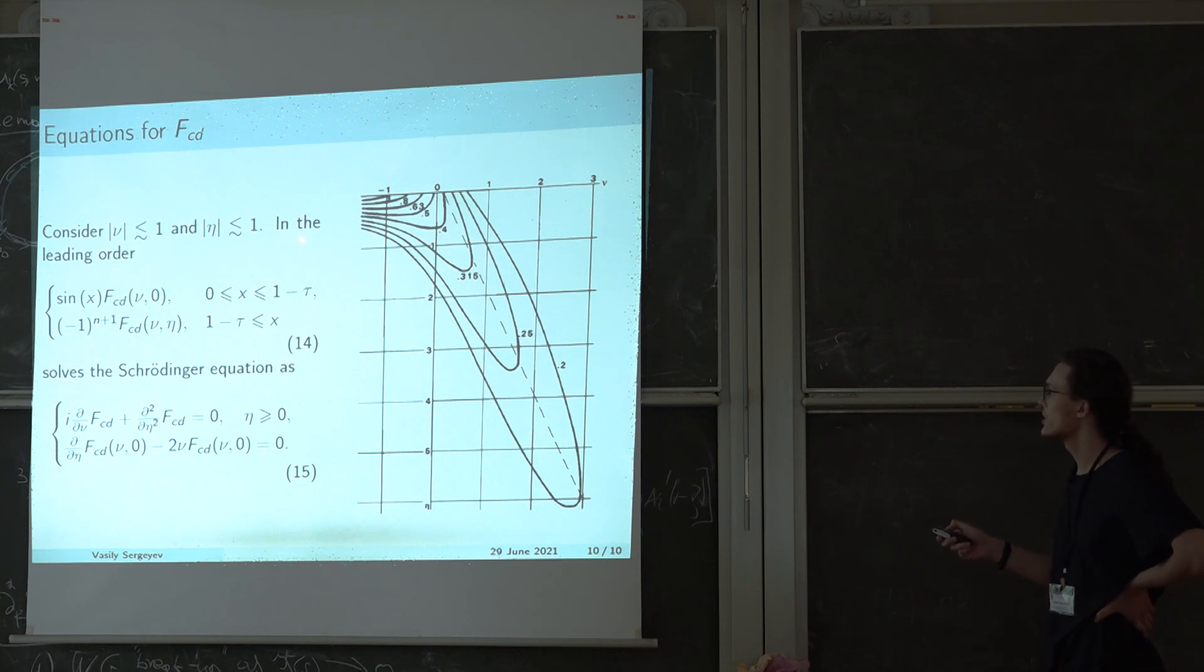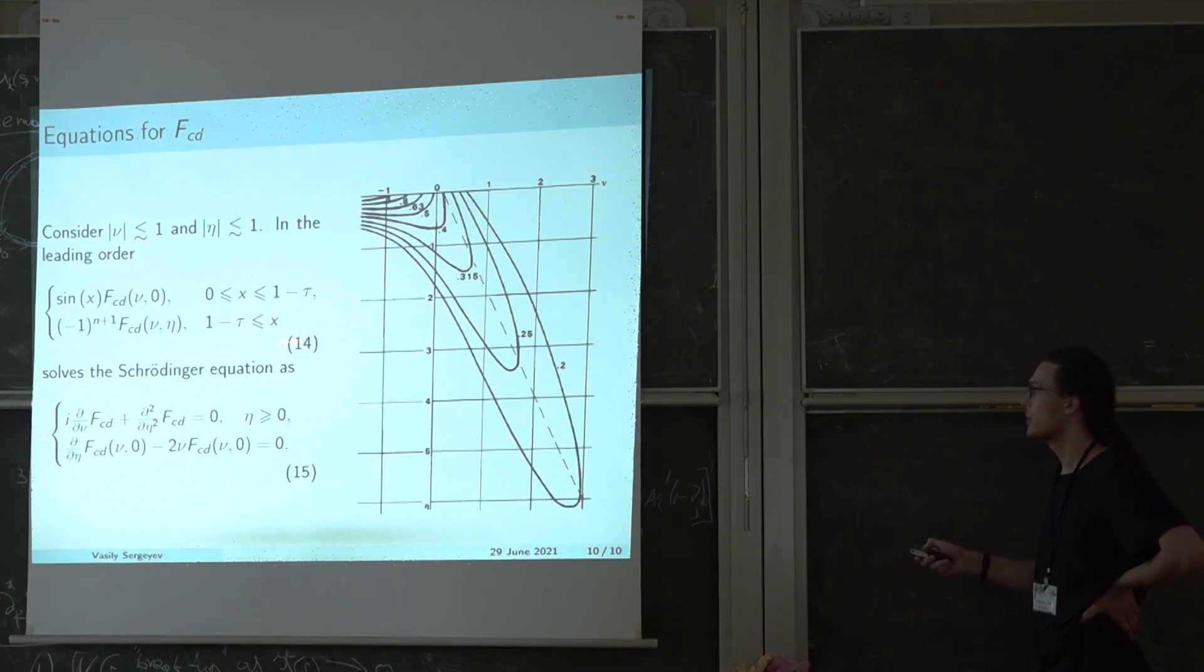Inside the potential well, it is sine of x times f when the second argument of f is equal to zero. And outside it is like this, up to some constant multiplier.